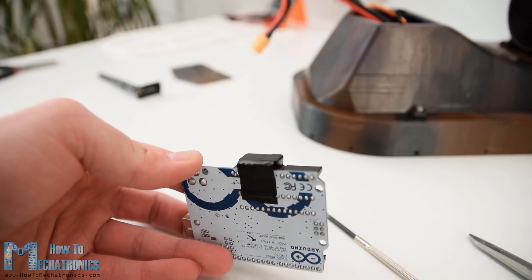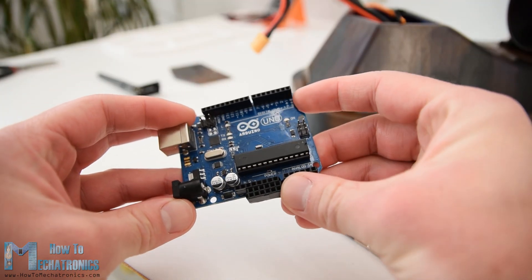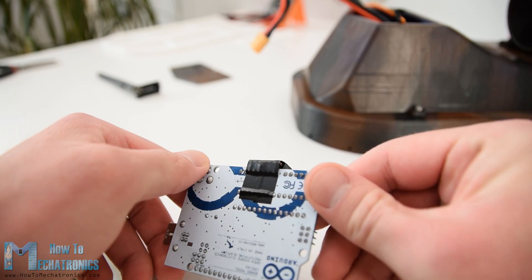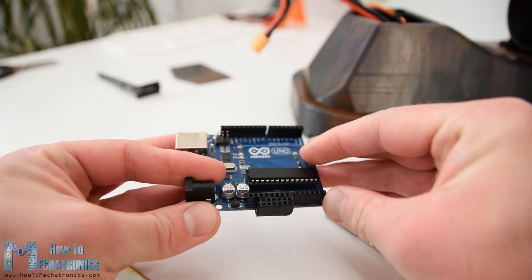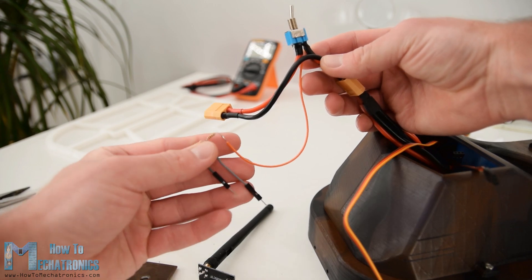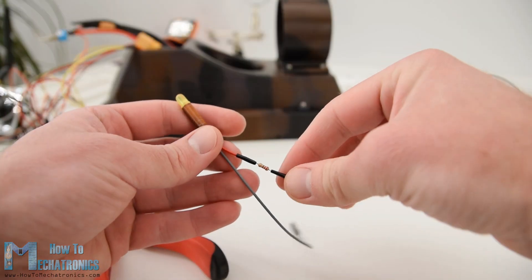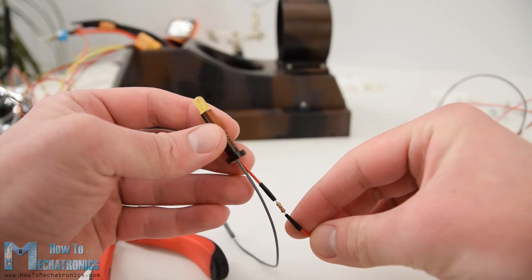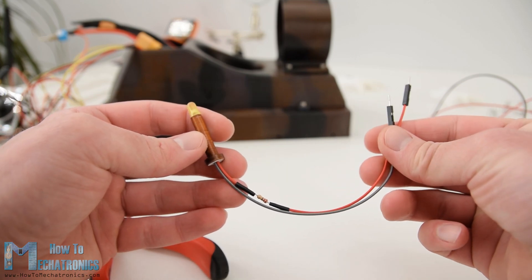Next we need to connect the components to the Arduino and for that purpose I added two pin headers to the Arduino which will serve as ground and 5V pins. Here you can see how I connected the voltage divider to the battery as well as the indicator LED which I inserted through a small cylindrical 3D printed part.